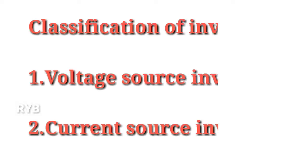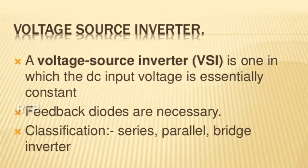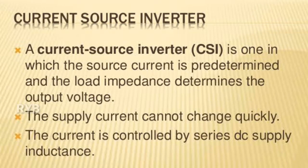Inverters are broadly classified into two types: voltage source inverters (VSI) and current source inverters (CSI). When the DC voltage remains constant it is called a voltage source inverter or voltage fed inverter. Sometimes the DC input voltage to the inverter is controlled to adjust the output; such inverters are called variable DC link inverters.